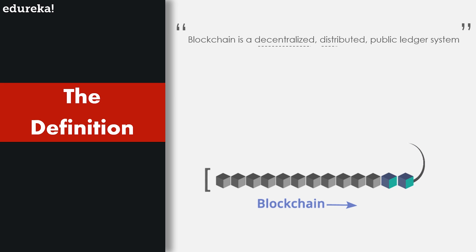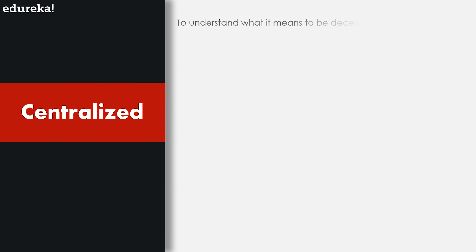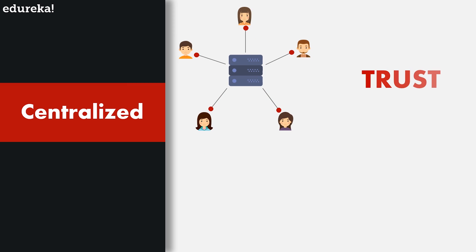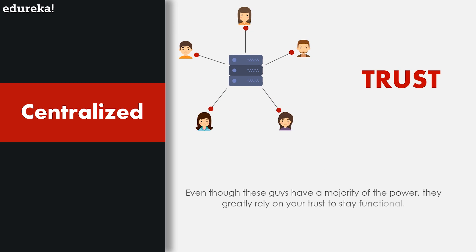Let's break down the definition and understand each technical term. The first terms we encounter are decentralized and distributed. To understand what it means to be decentralized, let's start with the status quo — centralization. Any organization or network where decisions are made by a chosen group of people is a centralized system. We are surrounded by centralized systems every day, whether it's ordering food from Zomato or booking a cab through Uber — you're going through a third party that has complete power over rules and regulations, and greatly relies on your trust to stay functional.